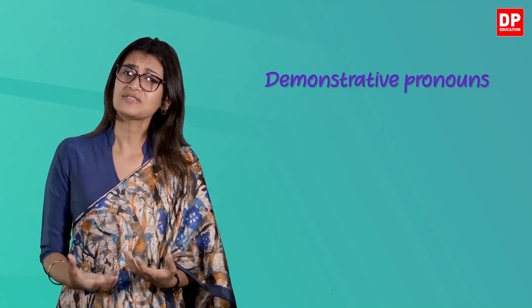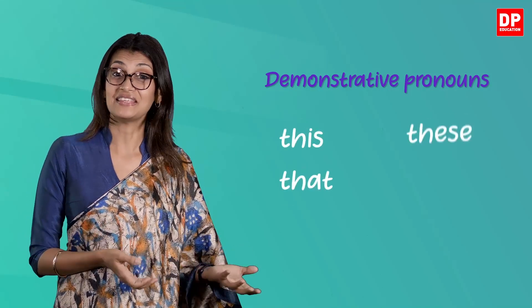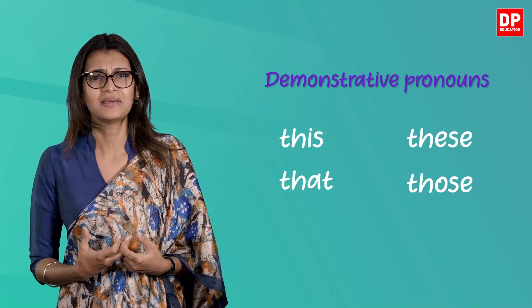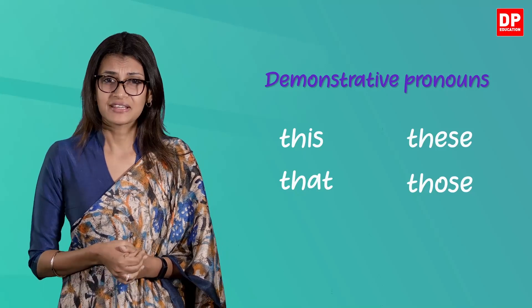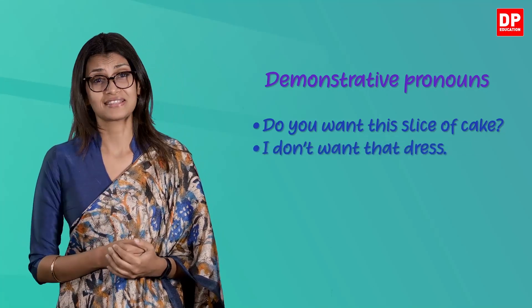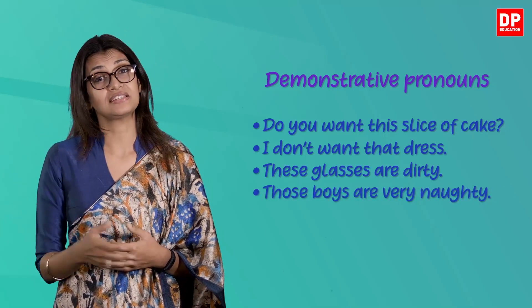Demonstrative pronouns are also used as determiners in English. There are four of them: this, that, these, and those. Demonstratives are used in a situation in which the speaker can point to the item they mean, making them even more specific than a definite article. For example, do you want this slice of cake? I don't want that dress. These glasses are dirty. Those boys are naughty. This and these refer to items nearby, and that and those refer to items that are far away. This and that are singular while these and those are plural.